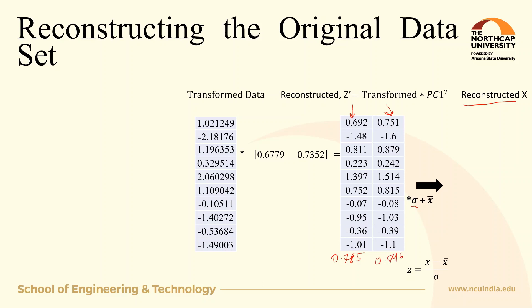Then add the corresponding mean: for the first column add 1.81, and for the second column add 1.91. This gives you the reconstructed X.